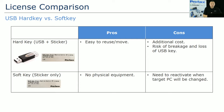With soft keys, the advantage is there's no physical equipment — you simply license your software. The downside is that whenever you need to reinstall the software or your operating system, the license will need to be reactivated because the site code used to generate your license will change on a new installation.